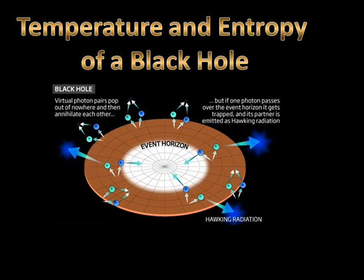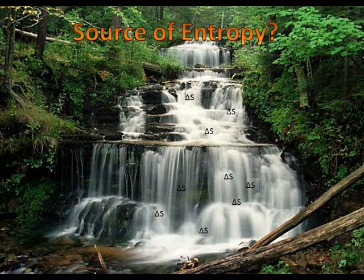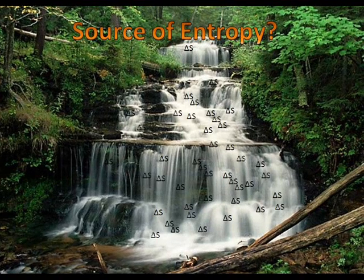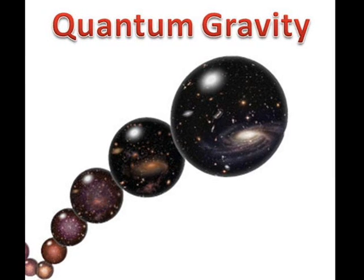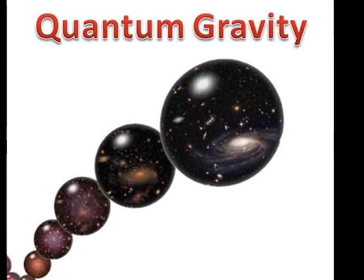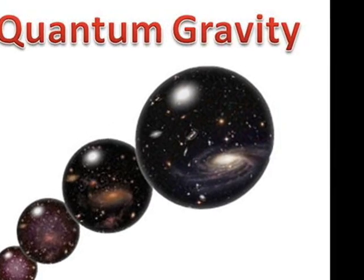According to these laws, black holes have a real temperature and entropy. But what is the source of this entropy? For this, we need to count the possible microstates of a black hole. But this requires a quantum theory of gravity, which still does not exist.